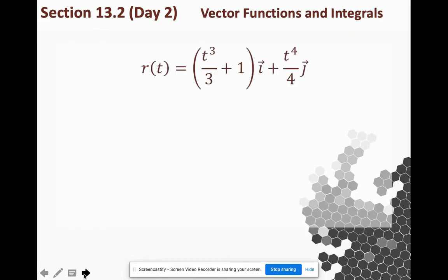So there is r. Given r prime, with an initial condition of 1, 0, I got back to r. I was also asked for r of 1, so now I'm going to plug 1 in for t, and that's what I get.